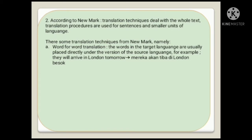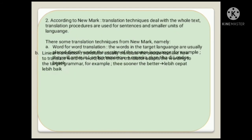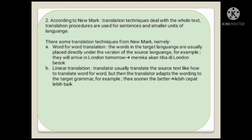In word-for-word translation, the words in the target language are usually placed directly under the source language version. For example: 'They will arrive in London tomorrow.' Next is literal translation, where the translator translates the source text word for word but then adapts the wording to the target grammar. For example: 'The sound of the water.'